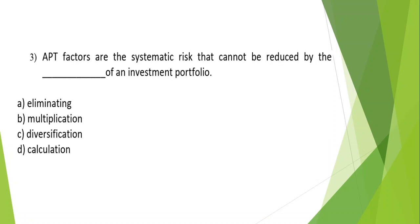Question 3 (fill in the blank): Arbitrage Pricing Theory factors are the systematic risks that cannot be reduced by the ___ of an investment portfolio. Options: A) Eliminating, B) Multiplication, C) Diversification, D) Calculation. The answer is Option C: Diversification.